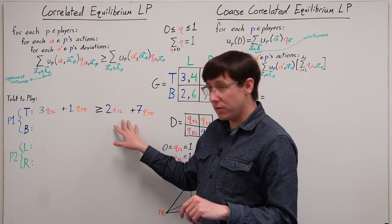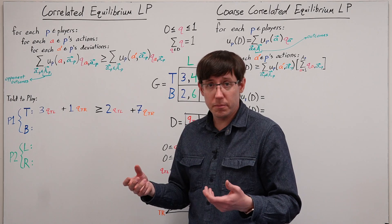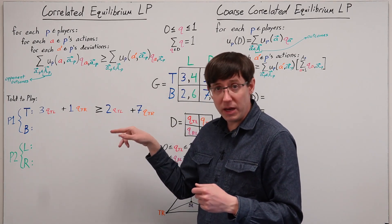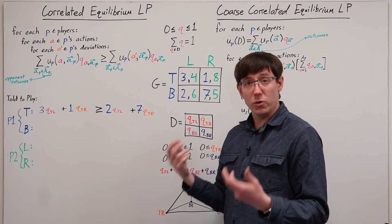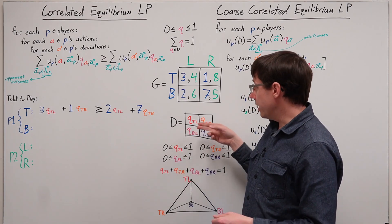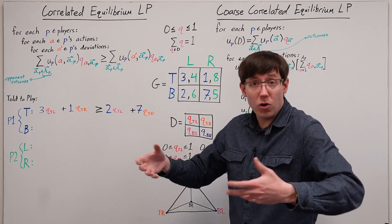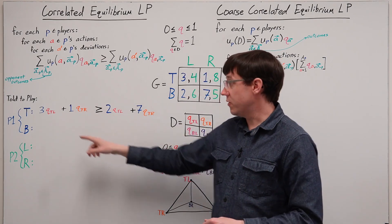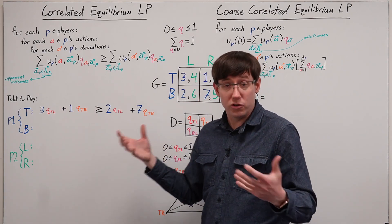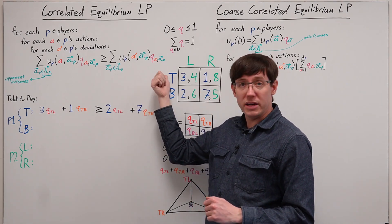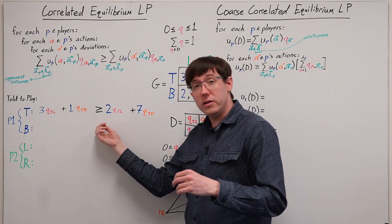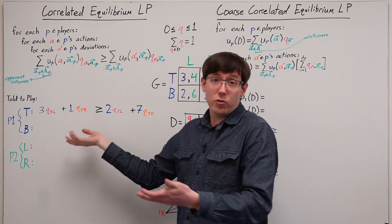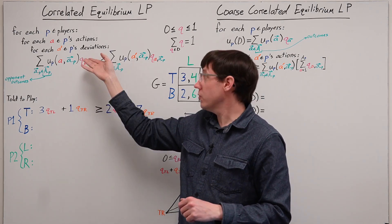The cancellation is fine as long as both of these probabilities are positive. We know they can never be negative, but it is possible that they're both zero. If both probabilities were zero, that would correspond to the case where player 1 is never told to play T in the correlated equilibrium distribution. In that case, the constraint simplifies to zero is greater than or equal to zero, which is true. So as long as the probability of being told to play T is non-zero, this constraint corresponds to the correlated equilibrium definition, and if both probabilities are zero, the constraint doesn't get in the way.